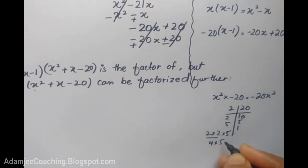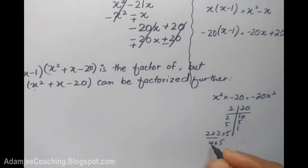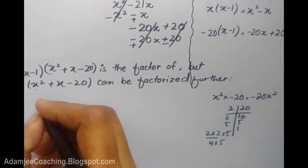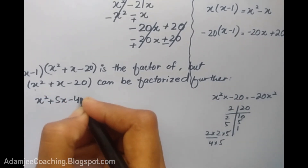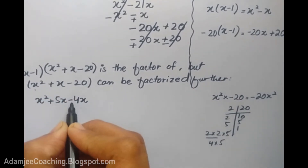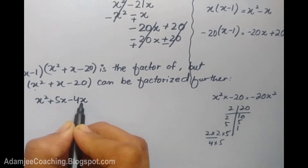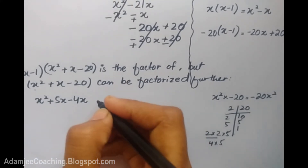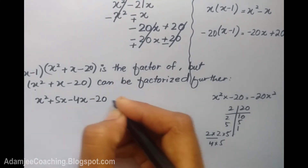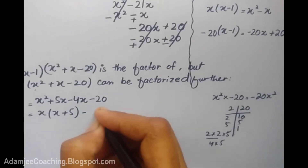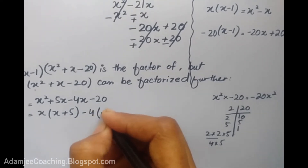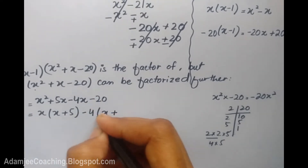2 times 2 is 4, multiplied by 5. The factor pair is 4 and 5, and 4 times 5 equals 20. So the factors that work are minus 5 and plus 4. If I have minus 4, that gives plus x. I will use minus 5 and plus 4, and adding: x equals minus 4.